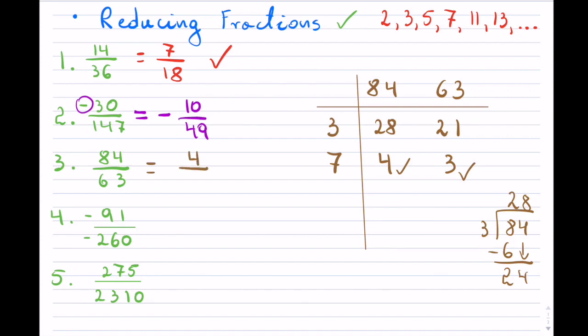So this becomes 3 over 4 — that is 4 thirds. If you want, you can change this to a mixed number, which will be 1 and 1 third. That is example number 3.